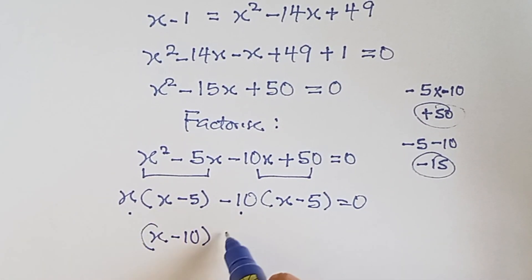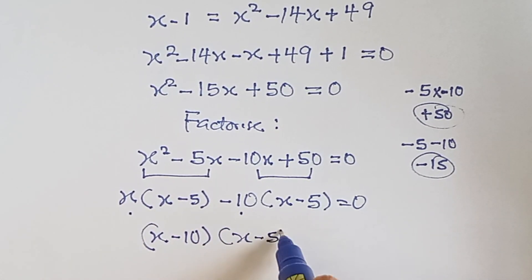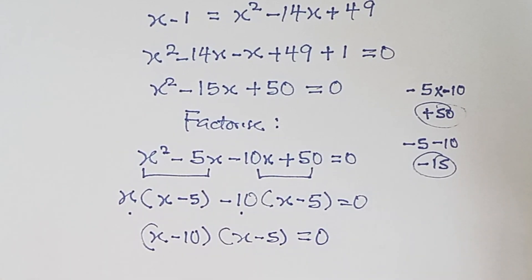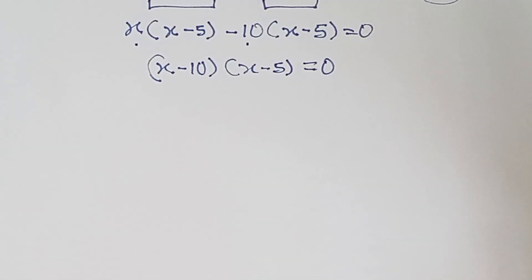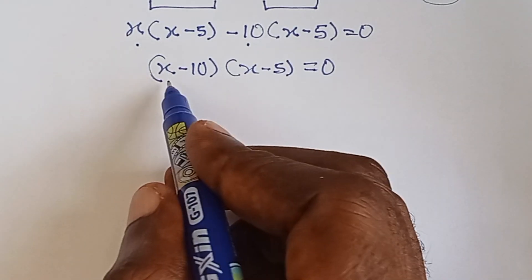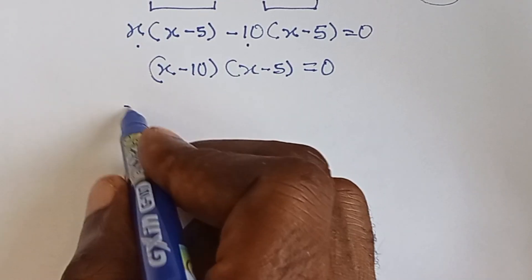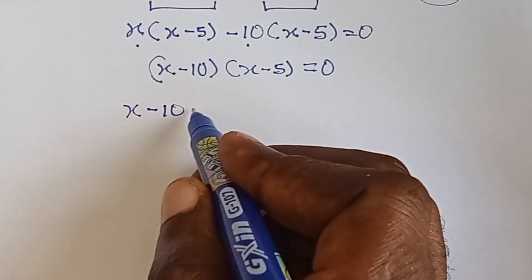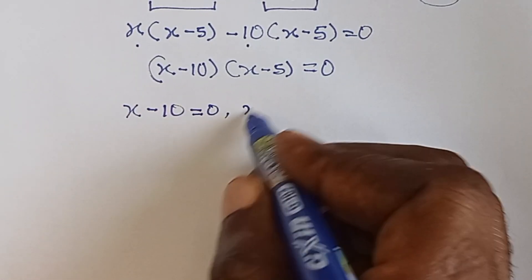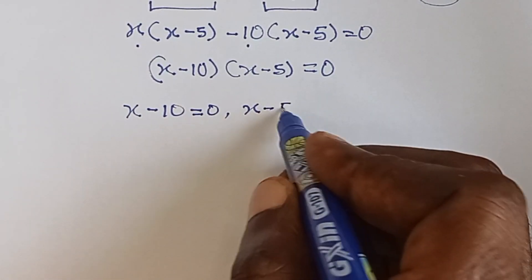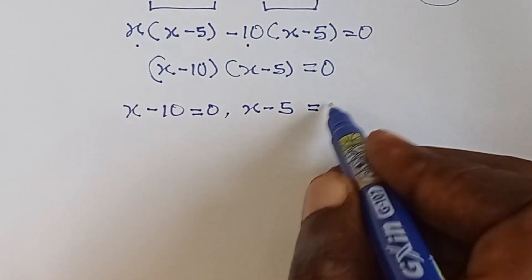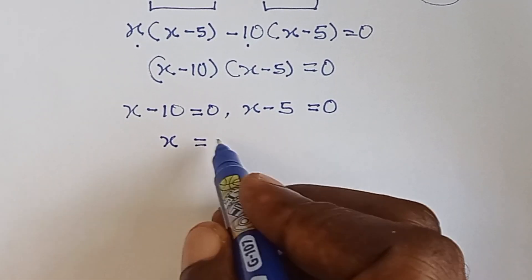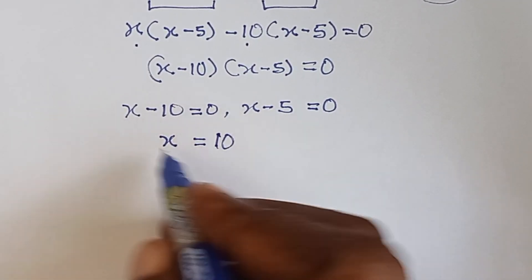We factor out x minus five from both pairs, giving x minus ten times x minus five equals zero. Setting each bracket equal to zero: x minus ten equals zero gives x equals ten, and x minus five equals zero gives x equals five.